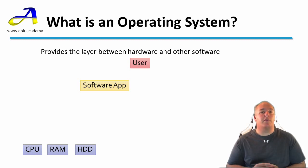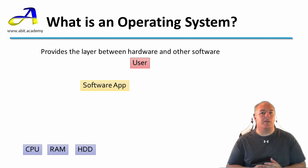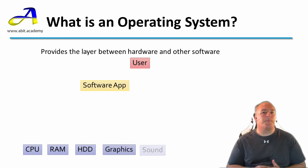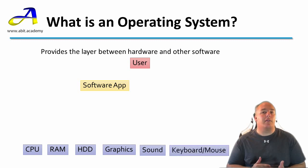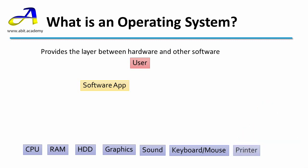The CPU, RAM, and hard drive are involved in working with these mathematical formulas and storing their results. Other hardware items that may be involved as the user interacts with the software include graphics to allow the user to see the output of the app, a sound card for audible feedback, a keyboard and mouse to enter information, and perhaps a printer for physical output.